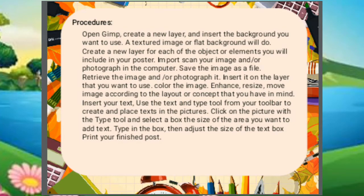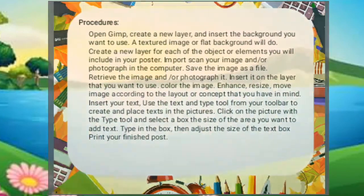Number four: insert your text. Use the text and type tool from your toolbar to create and place text in the picture. Click on the picture with the type tool and select a box the size of the area you want to add text. Type in the box, then adjust the size of the text box. And finally, print your finished poster.